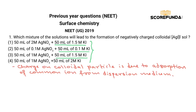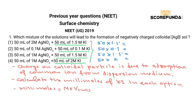For all the options we calculate millimoles, where millimoles = M × V(mL). Calculating: 50 × 1.5 = 75, 50 × 0.1 = 5, 50 × 1.5 = 75 again, and 50 × 2 = 100. The most millimoles corresponds to option D.